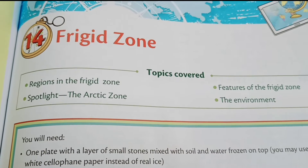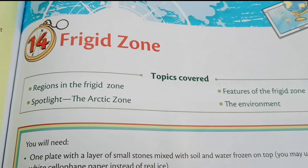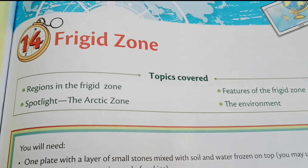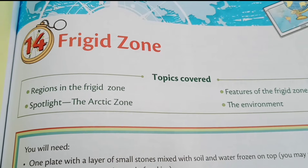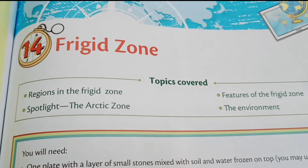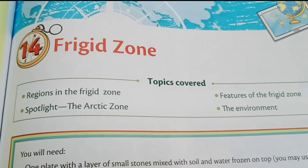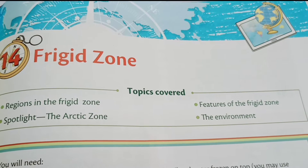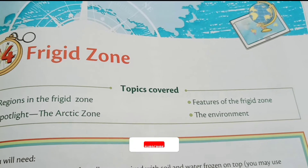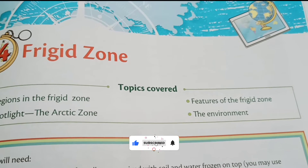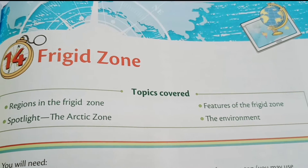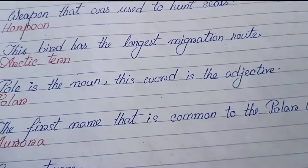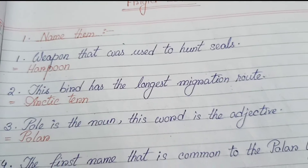Hello students, welcome to West Bengal English Video Guide. Today we are going to solve Chapter 14 from Class 5 Geography book — Frigid Zone. We will solve the exercise question answers and also inside question answers from the chapter. Don't skip the video, watch till the end. If you have any queries, please let me know in the comment box. Let's start Frigid Zone.